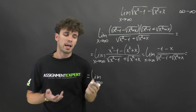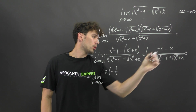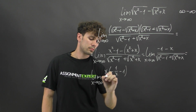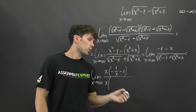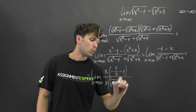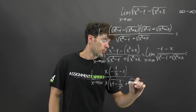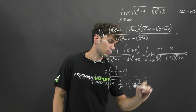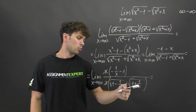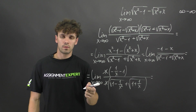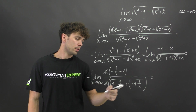So now we have the limit of (negative 1 minus x) over (square root of x squared minus 1, plus square root of x squared plus x). In the numerator we factor out x, giving (negative 1 over x, minus 1) in brackets. In the denominator we also factor out x, giving (square root of 1 minus 1 over x squared, plus square root of 1 plus 1 over x). We cancel out x, and since x tends to infinity, all terms with x in the denominator tend to 0.